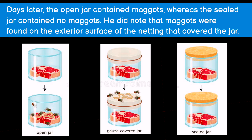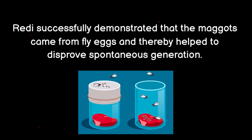Days later, the open jar contained maggots, whereas the sealed jar contained no maggots. He also noted that maggots were found on the exterior surface of the netting that covered the jar. Redi successfully demonstrated that the maggots came from fly eggs, thereby helping to disprove spontaneous generation.